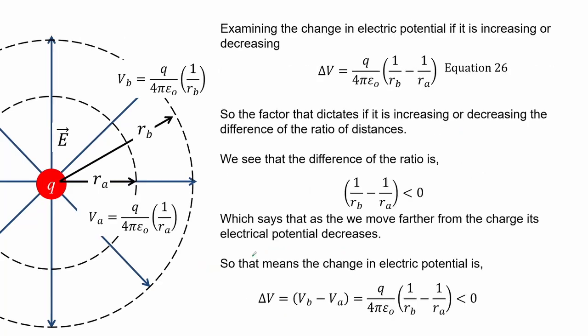Examining the change in electric potential: looking at equation 26, the factor that dictates whether it is increasing or decreasing is the difference in the ratio of distances. The difference of the ratio gives a negative value, which says that as we move farther from the stationary charge its electric potential decreases — so the change in electric potential is negative.